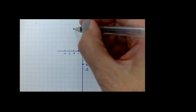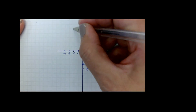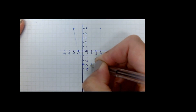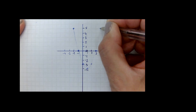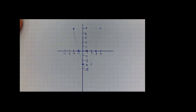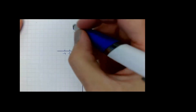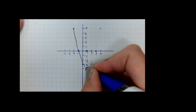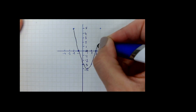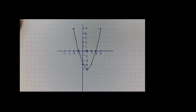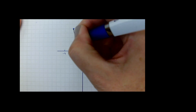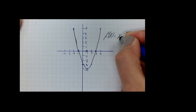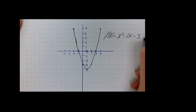Now connect all the plotted points with a smooth curve. We get a U-shaped curve, which is the graph of f(x) = x² - 2x - 3.